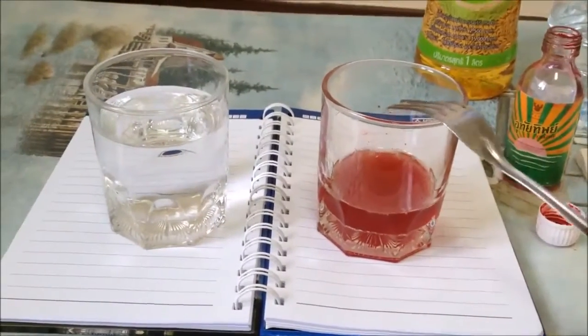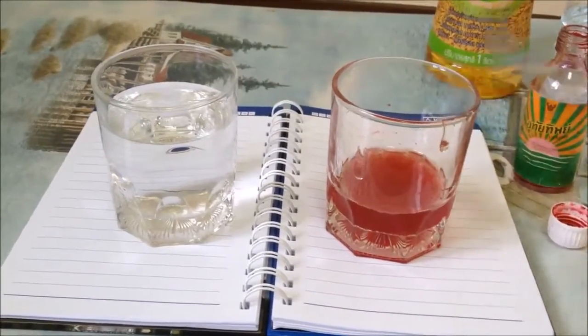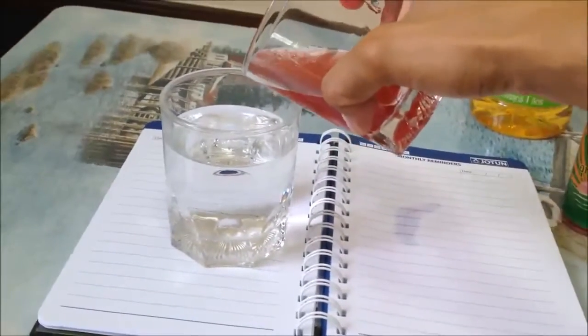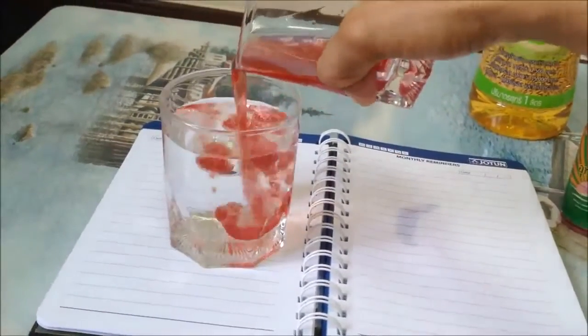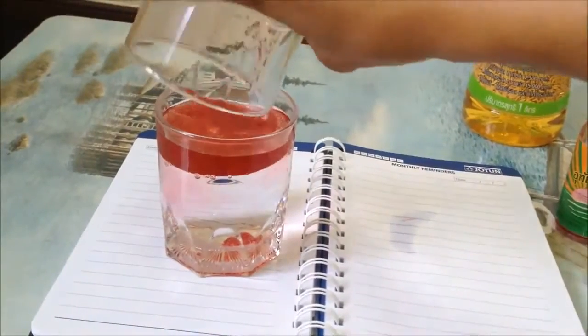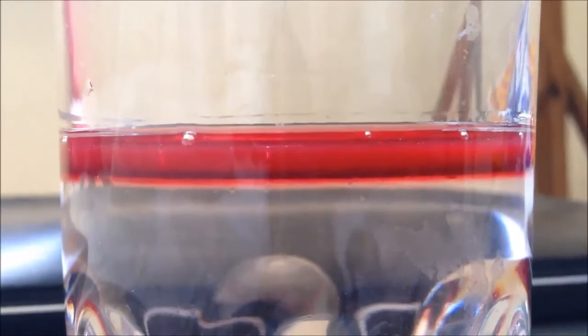When you mix the cooking oil and food dye well enough, pour the mixed solution in the second glass into the first glass that's filled with water, and you should start seeing something cool. Wow! The cooking oil and food dye flow to the top of the glass right away, as cooking oil is less dense than water.